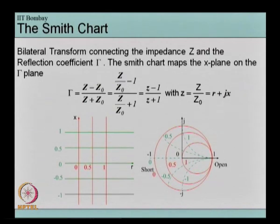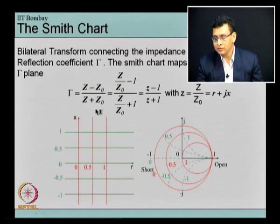The Smith chart is what we call the bilinear transformation of the impedance from the z plane to the gamma plane. As you can see this formula, even though I am saying it is a bilinear transformation, this formula is analogous to the formula for the reflection coefficient.